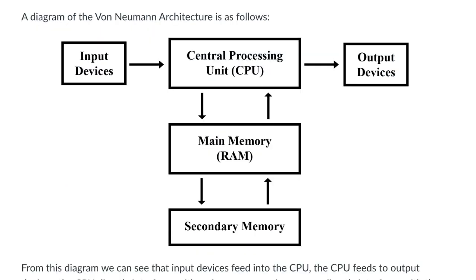From this graphic, we can see that input devices tend to feed into the central processing unit, which then interfaces with main memory to get instructions and data. Main memory will interface with secondary memory to also get instructions and data that are not already in main memory — we'll go over that more in depth later. That data is sent back from RAM to the CPU, and when the CPU has finished processing, it will send output to the output devices.